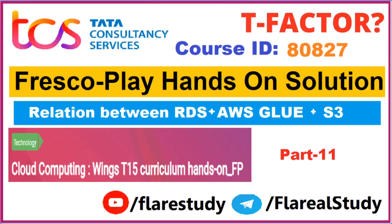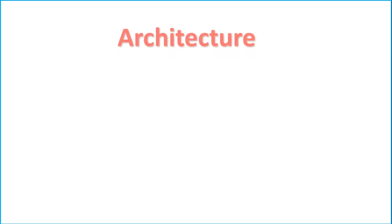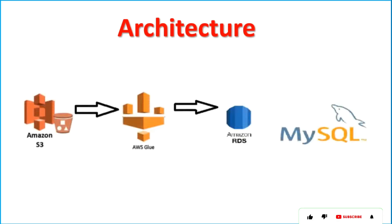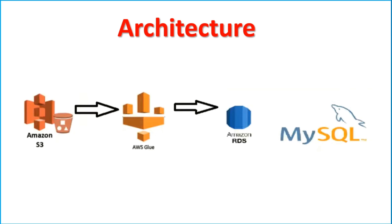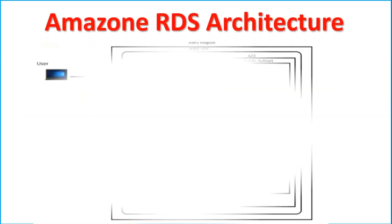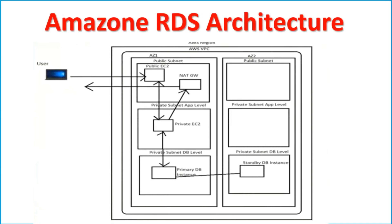In this video I will show you how to load data from Amazon S3 to Amazon RDS MySQL database engine using Amazon Glue service. This is the architecture we are going to implement. First we load the data into Amazon S3, then use the AWS Glue crawler service to create the data source, and finally use an AWS Glue job to load the data from S3 to Amazon RDS MySQL.